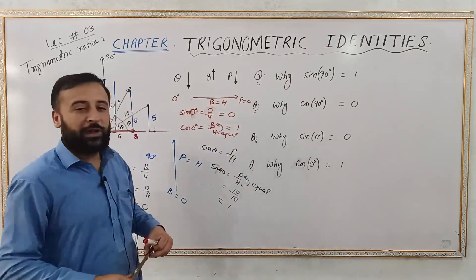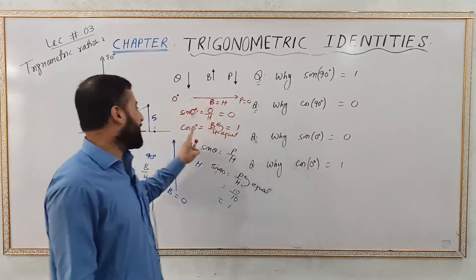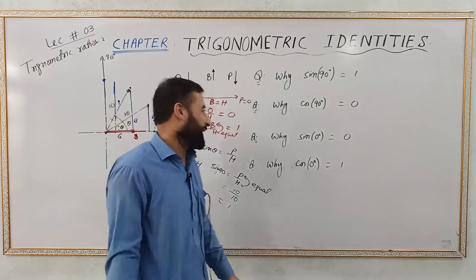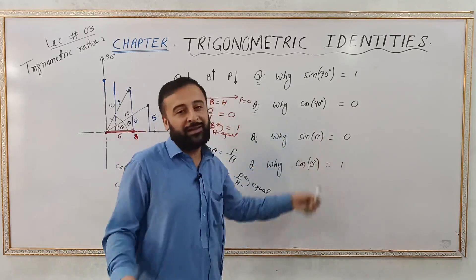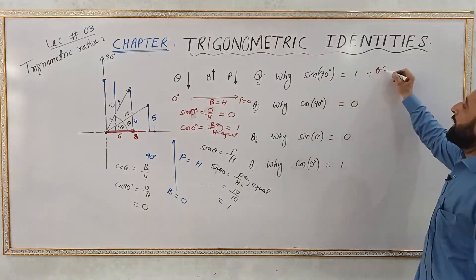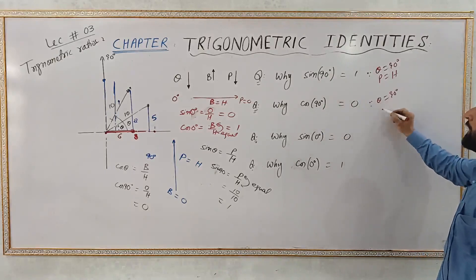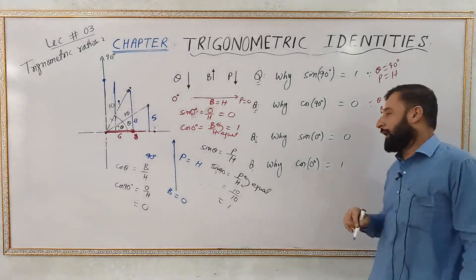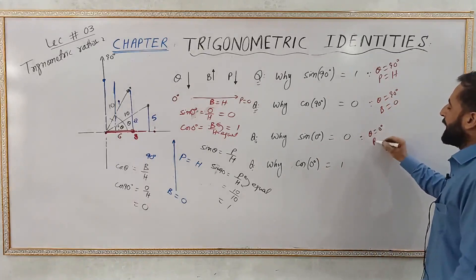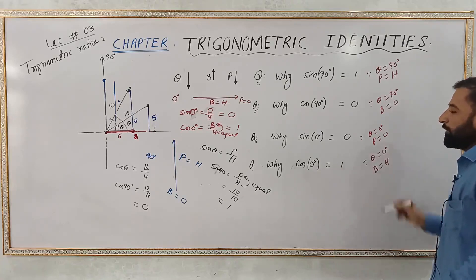Now dear students, hopefully you can answer all four questions. Why is cosine of zero equal to 1? Because at zero degrees, base and hypotenuse are equal, and the ratio of equal things is always 1. Why is sine of zero equal to 0? Because at zero degrees, perpendicular is zero. Why is sine of 90 equal to 1? Because at 90 degrees, perpendicular and hypotenuse are equal. Why is cosine of 90 equal to 0? Because at 90 degrees, base is zero, and cosine depends on base divided by hypotenuse.